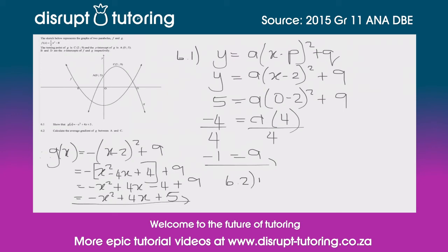We use our normal gradient formula. The average gradient between A and C is simply (y₂ - y₁)/(x₂ - x₁). Let's use C as our first coordinate pair, so that's going to be (9 - 5) over... and then we need to do x₂ - x₁, so we use C again because we used 9 first, so it's 2 - 0.